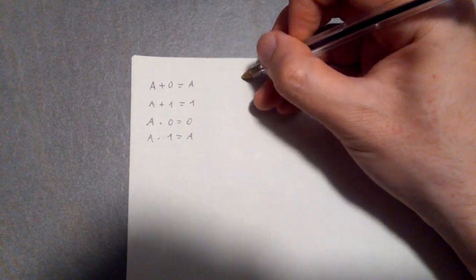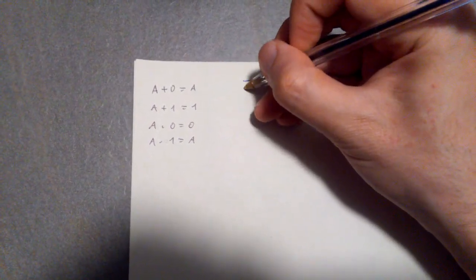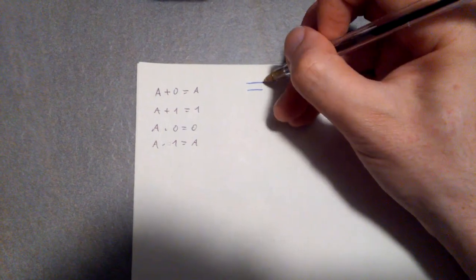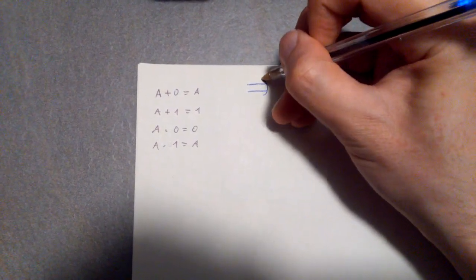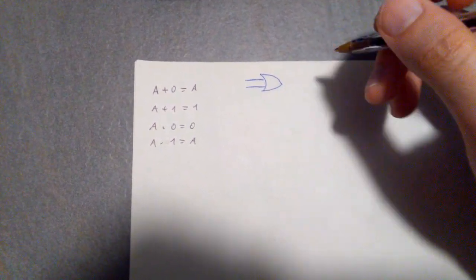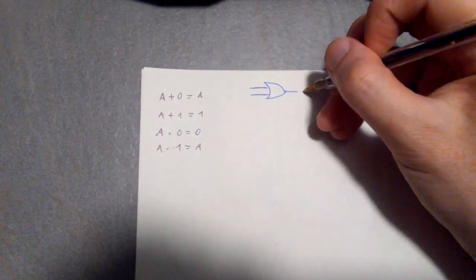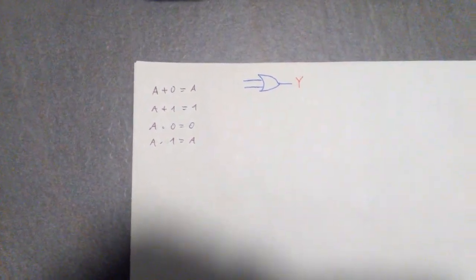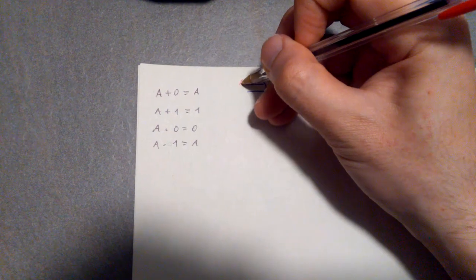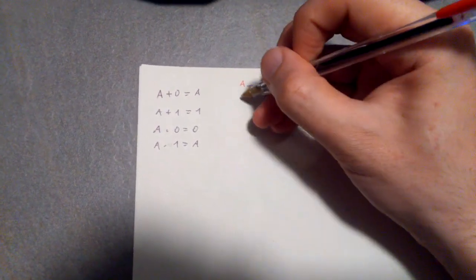So this one, the first one, what it means is that if I get an OR gate like this, with the output where the output is Y and the input is A and the other one is 0...